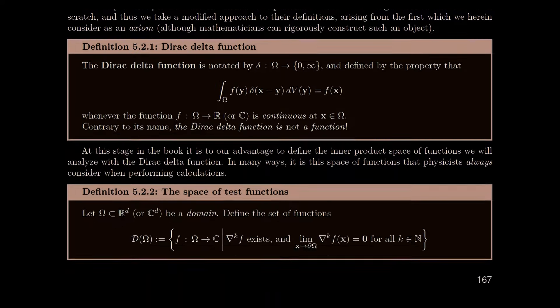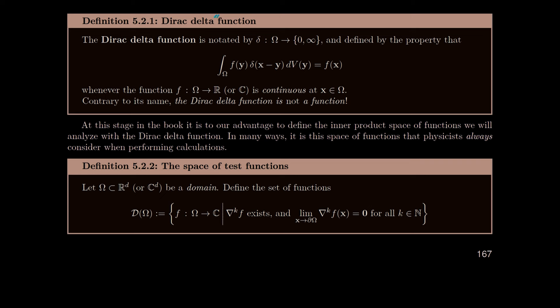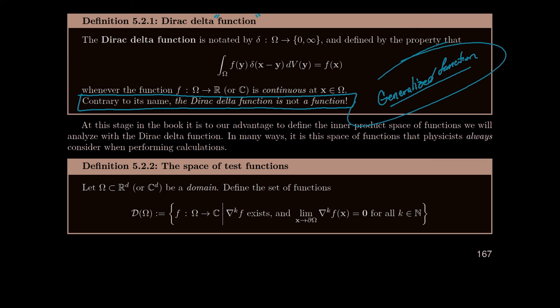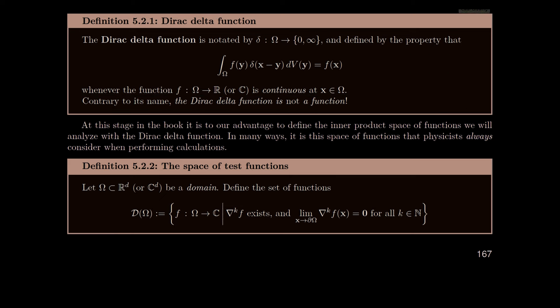What we get instead is the Dirac delta function — and I really want to emphasize the quotation marks around the word 'function.' Contrary to its name, the Dirac delta function is not a function, so don't think it obeys all the properties functions obey. It satisfies something called a generalized function, which means some properties of functions agree with it but others don't. You just have to be careful — multiplication is one operation you really can't do freely; you can't multiply two Dirac delta functions together and get something meaningful in many situations.